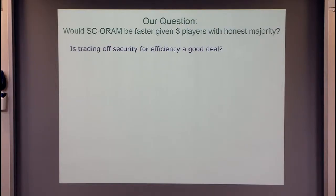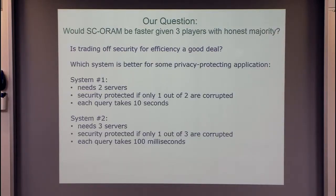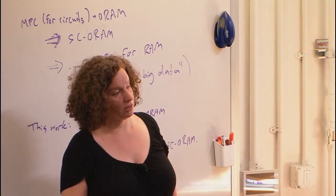This is an example to demonstrate how three parties can be much faster than two parties for a simple primitive. Let's think about oblivious transfer. Party P1 has M0 and M1, party P2 has a bit B and wants to get MB. Any two-party protocol will need some sort of PK public key crypto exponentiation. However, for three parties, we can do everything very simply using an old trick of beavers, of OT with precomputation.